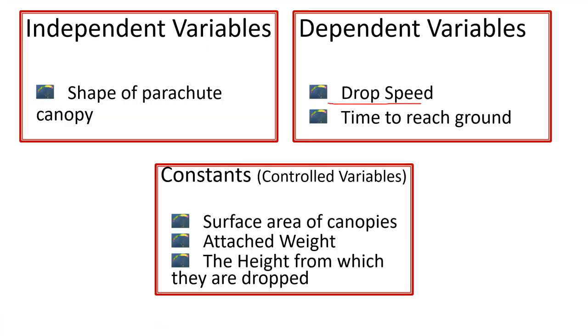The drop speed and the time to reach the ground all depends on the surface area of the canopies, the attached weight, and the height from which they are dropped at. And the shape of the parachute as I have mentioned before are circular, triangular, rectangular, and square.